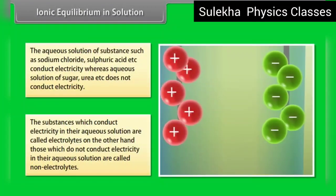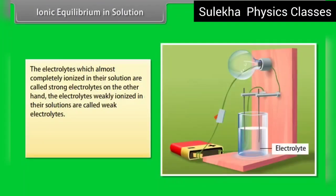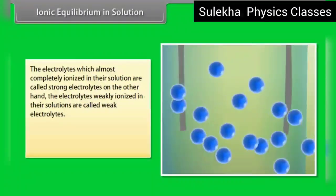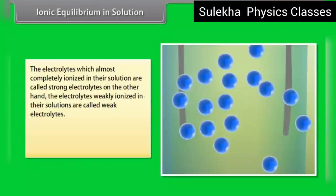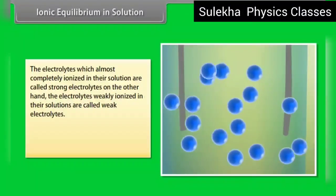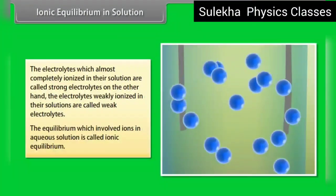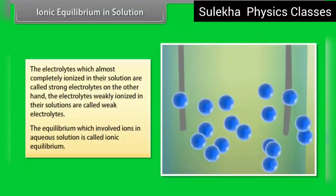The electrolytes which are almost completely ionized in their solution are called strong electrolytes. On the other hand, the electrolytes weakly ionized in their solutions are called weak electrolytes. The equilibrium which involves ions in aqueous solution is called ionic equilibrium.